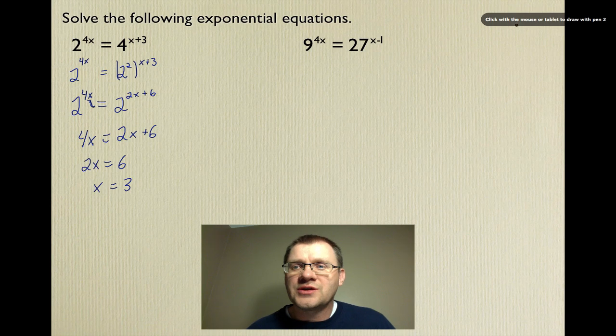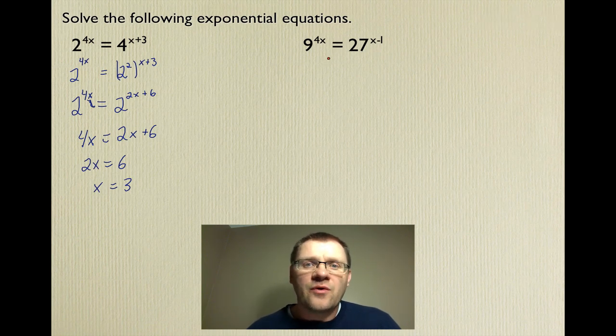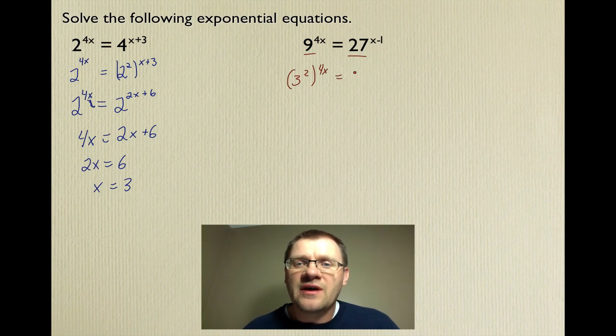Our second equation is 9 to the power of 4x equals 27 to the power of x minus 1. So 9 to the power of 4x, and we're looking at the bases now. So we have 9 and 27. Hopefully you can recognize that the smallest base that both these two numbers can be written as is 3. So 9 is the same as 3 squared, so that's now 3 squared to the power of 4x. Notice how I'm using brackets to make sure that I remember to multiply these exponents after. And 27 is 3 cubed, still raised to the power of x minus 1.